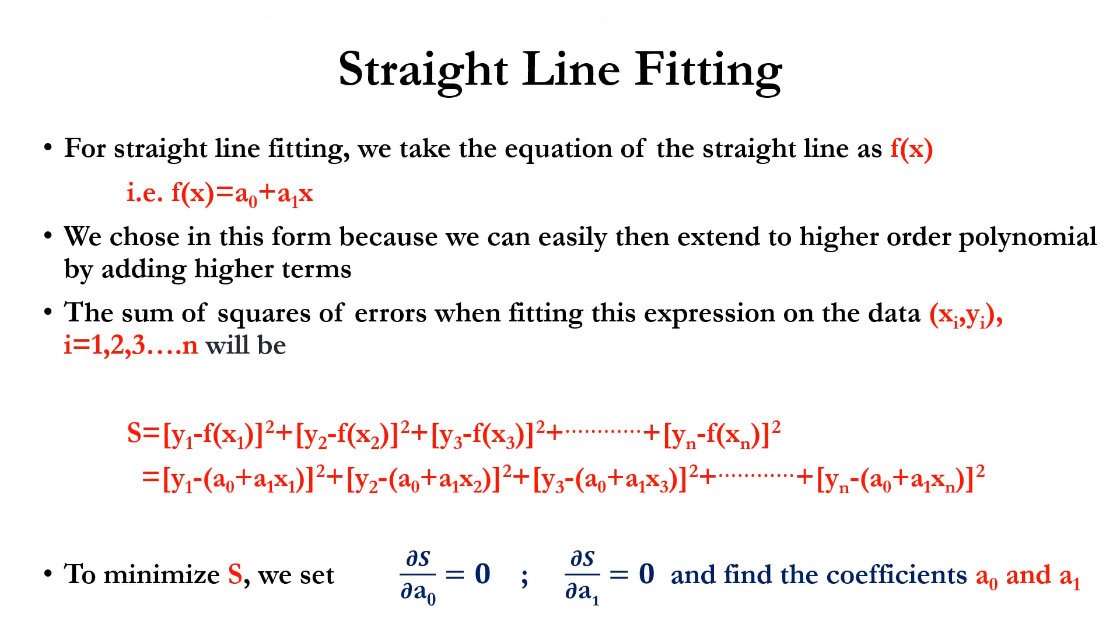Here, we will see a simple least squares fitting method, that is straight line fitting. We are going to fit a straight line to the given data (xᵢ, yᵢ). We know the form of straight line, the function of straight line. It can be written as a₀ plus a₁x. We choose this form because we can easily extend to higher order polynomials by adding the higher terms like a₂x² plus a₃x³ plus a₄x⁴, et cetera.